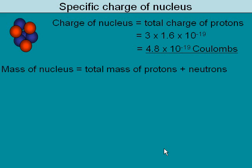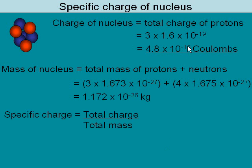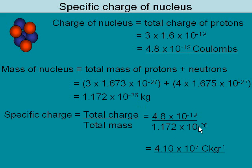The total mass of the nucleus is the mass of the protons plus the mass of the neutrons. We've got three protons and four neutrons, simply multiplied by the mass of each one. The specific charge then is the total charge divided by the total mass. Notice the units are Coulombs per kilogram.